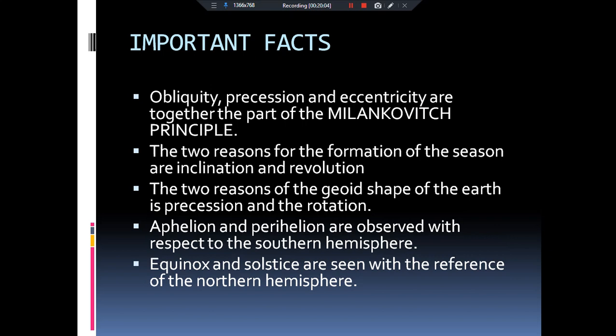Now some important facts. Obliquity, eccentricity, and precession together are known as the Milankovitch cycles, and they are responsible for climate change. The formation of seasons is because of two reasons: revolution and the inclination of the earth towards the sun. The geoid shape of the earth has two reasons: precession and rotation. Aphelion and perihelion are taken with respect to the southern hemisphere, while solstice and equinox are taken with respect to the northern hemisphere. To revise: precision and rotation give the geoid shape; inclination and revolution are responsible for the seasons.